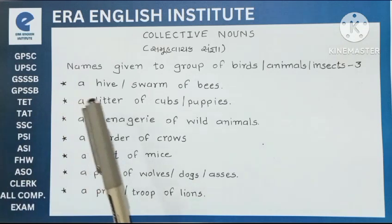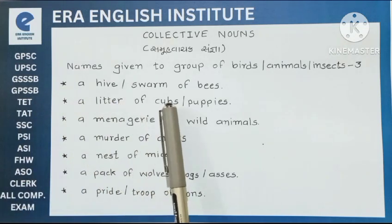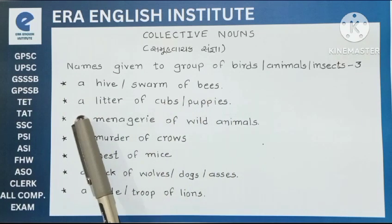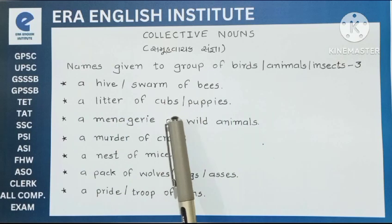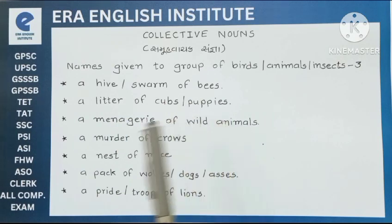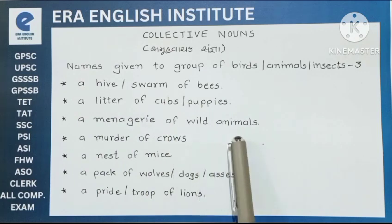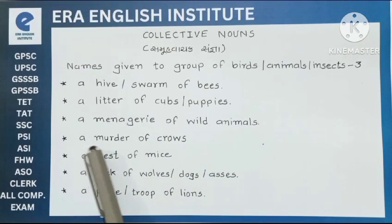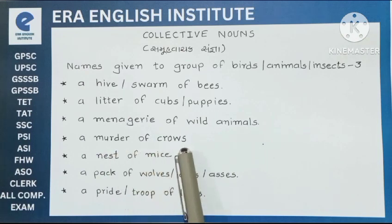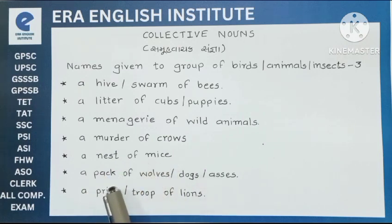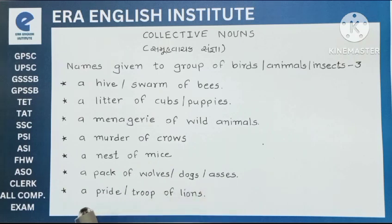Now revise it again: a hive or swarm of bees. A litter of cubs or puppies. A menagerie of wild animals. A murder of crows. A nest of mice. A pack of wolves, dogs, asses. Last one: a pride or troop of lions.